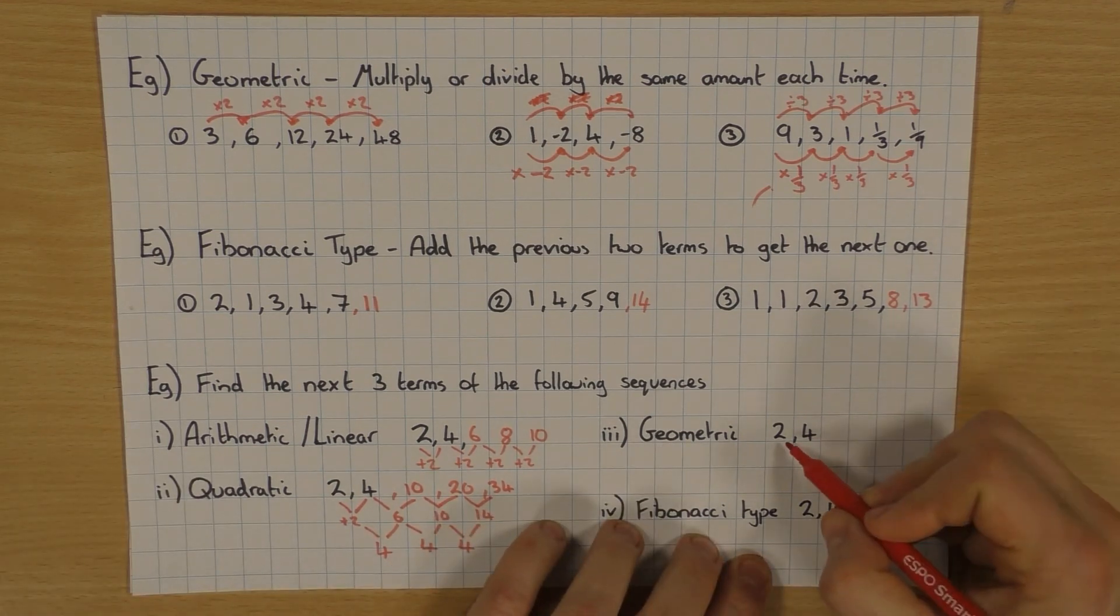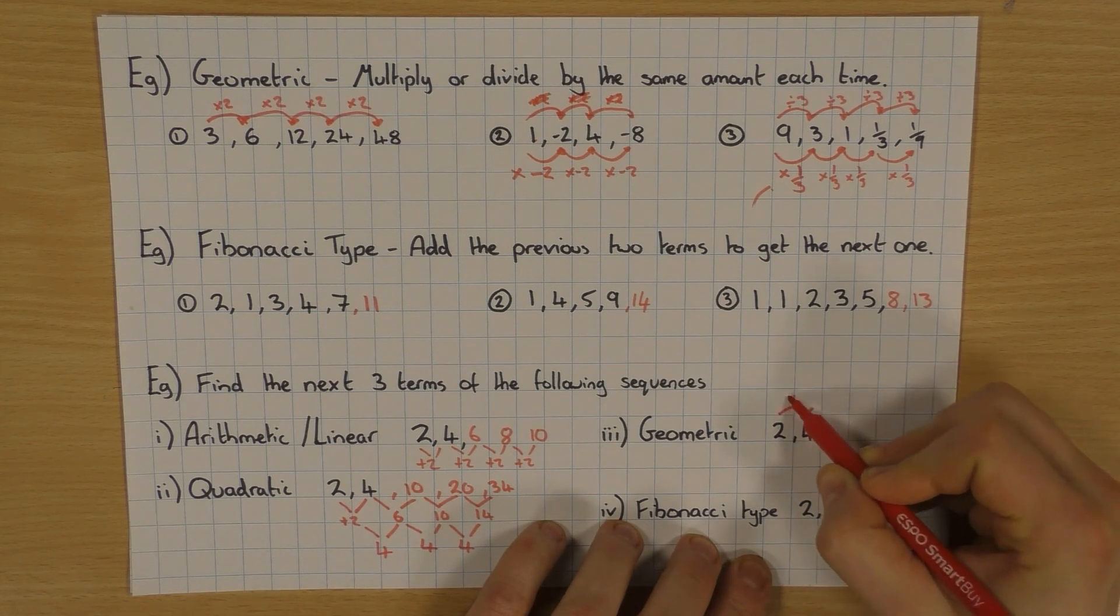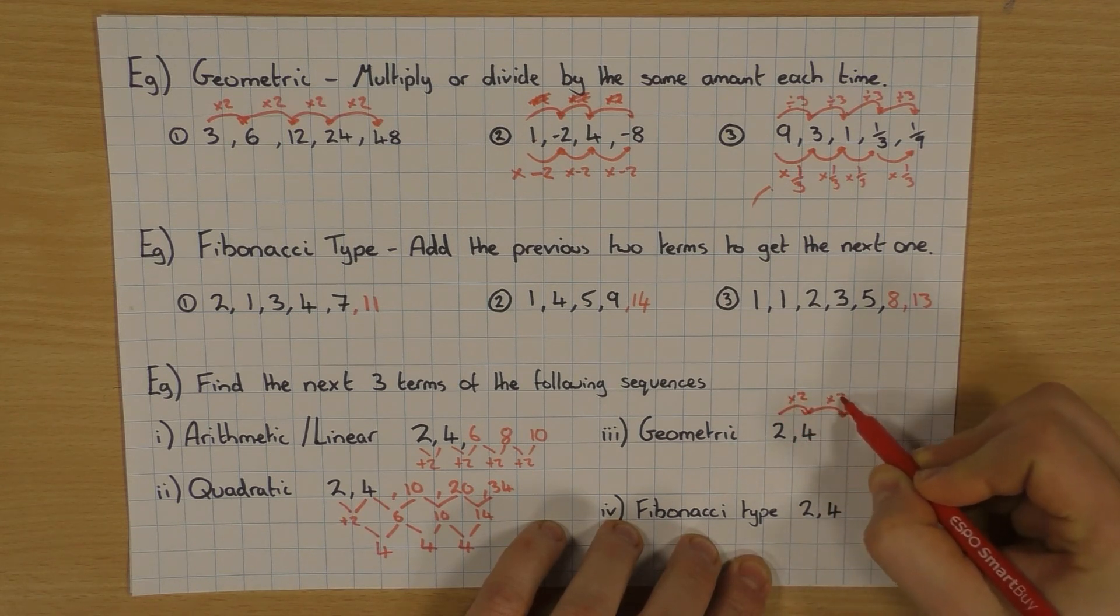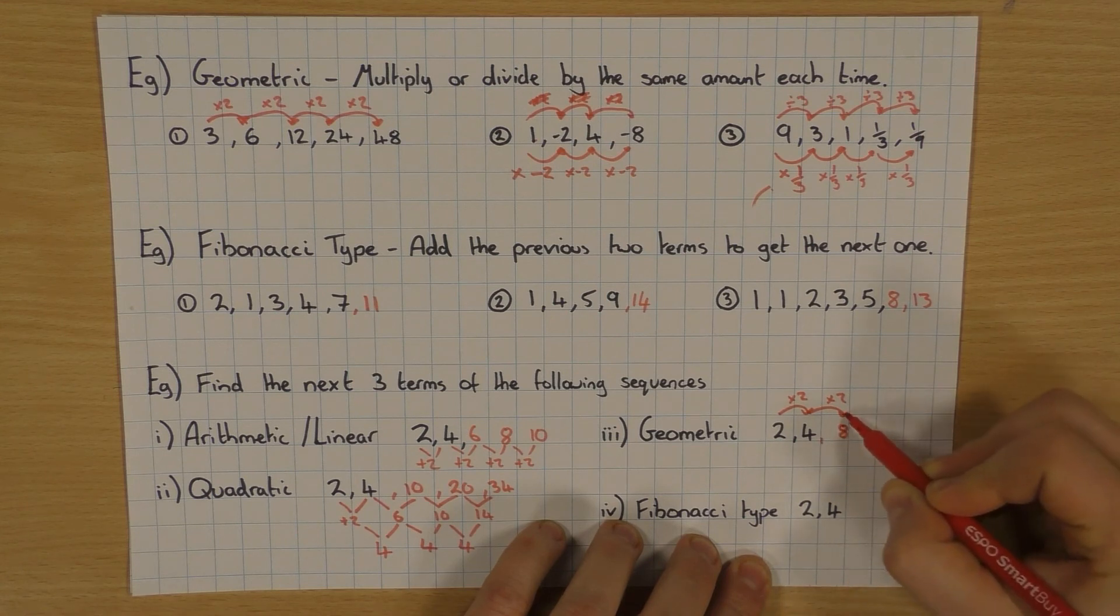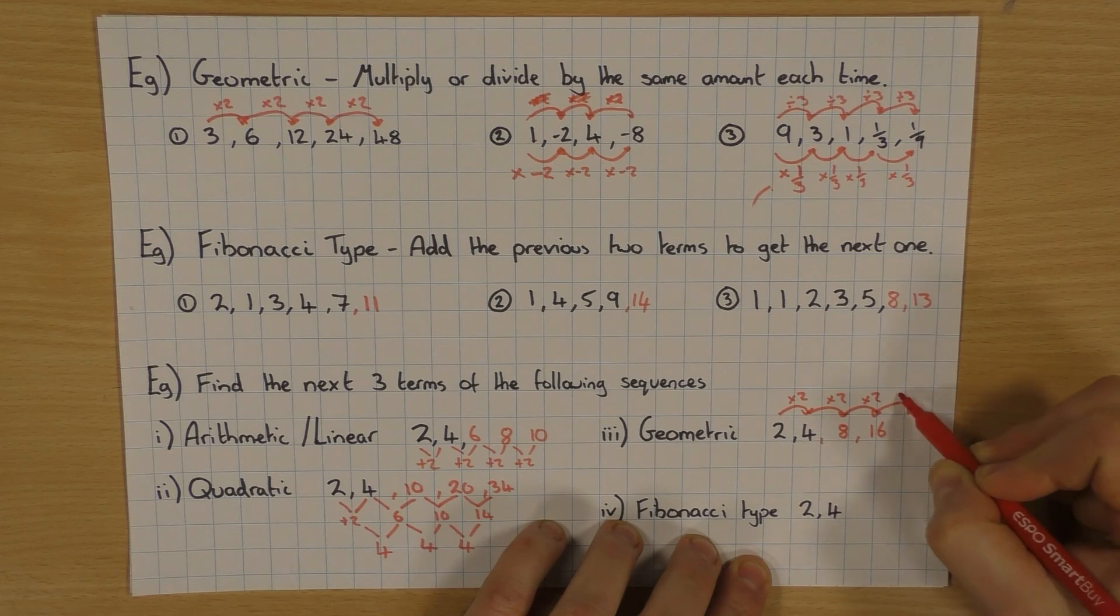Geometric. Slightly easier. Remember it's timesing. So what do I times 2 by to get to 4? Well, I times by 2. So keep that rule going. Times by 2. So 4 times 2 is 8. Times by 2. 16. And one more. Because it wants 3 terms. So 32.